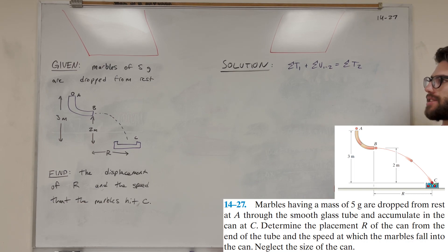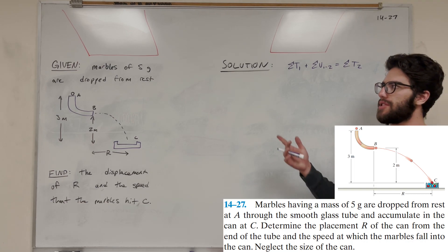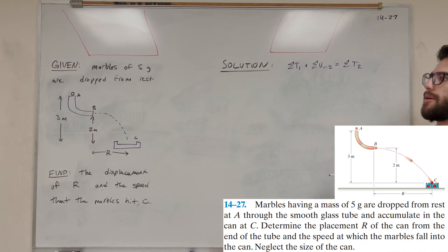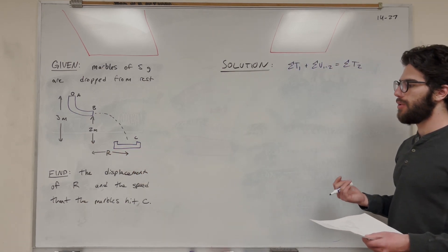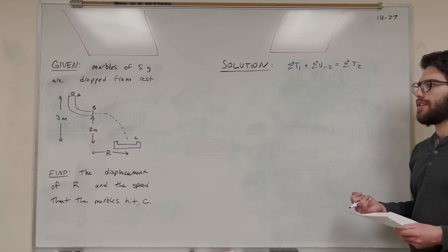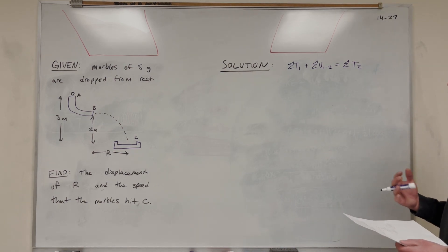What's up, Kyle Gang? Welcome back to SimDynamics. We have this question here. We have marbles that are 5 grams, dropped from rest, and they go through this tube from A to B, and then fall from B into C, into some basket. Our goal is to find the displacement of R, how far we need to place that basket away from B, and the speed at which the marbles hit C. Half of this is going to be a kinematics problem, but the first half is going to be a work energy kind of question.